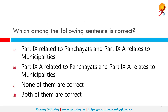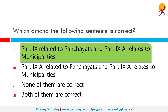Which among the following sentences is not correct? The correct answer is that Part 9 is related to panchayats and Part 9A relates to municipalities — that statement is not correct. In fact, Part 9A is related to both panchayats and municipalities.